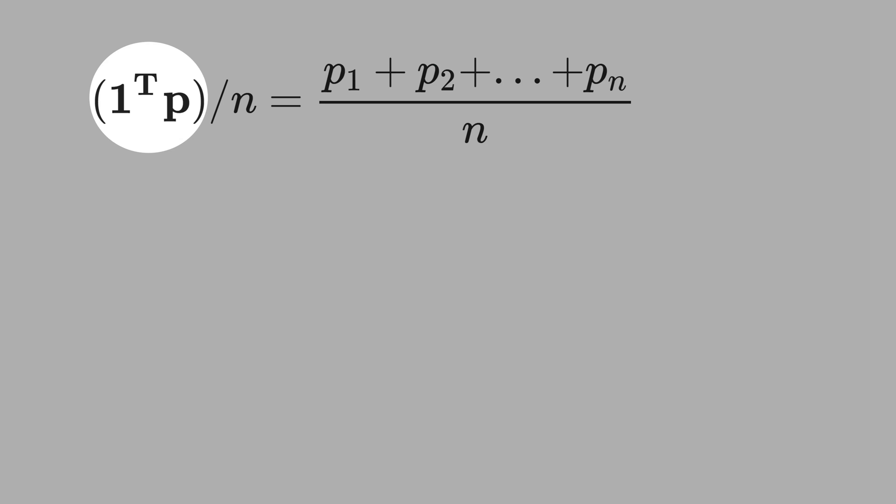Now, let's calculate the inner product of two vectors, 1 and p, divide by a scalar, n. See that this is the mean. See here that you can visually distinguish what is a vector and what is a scalar.